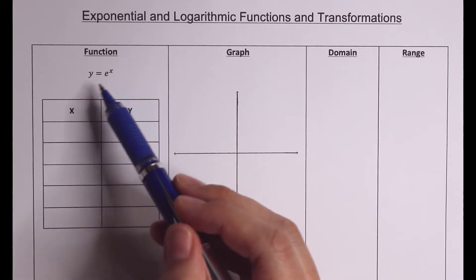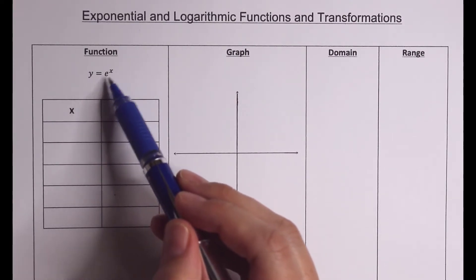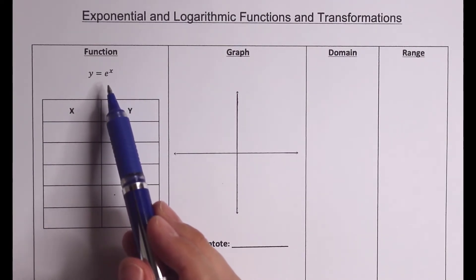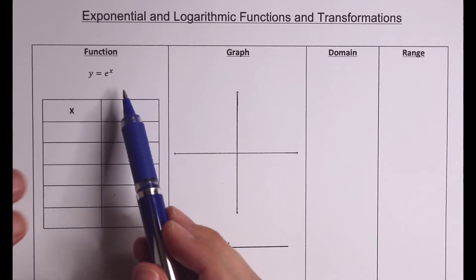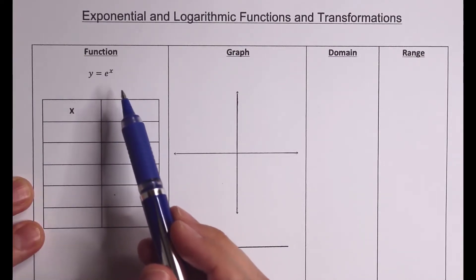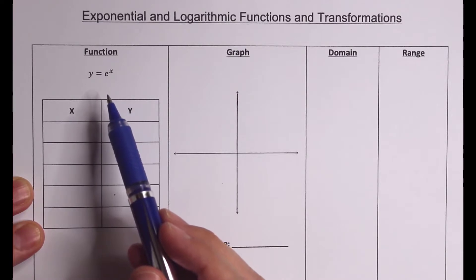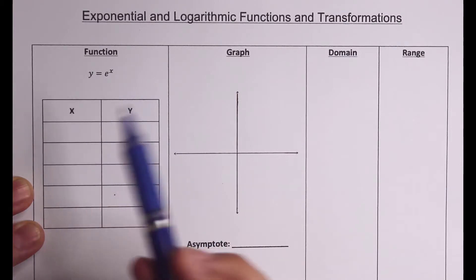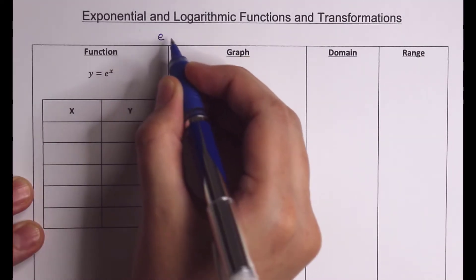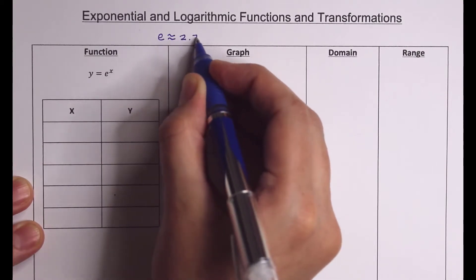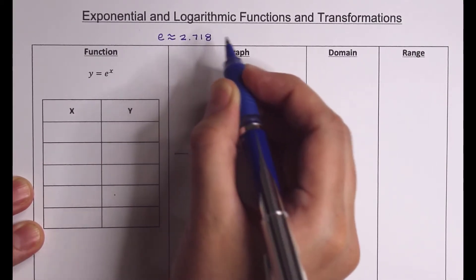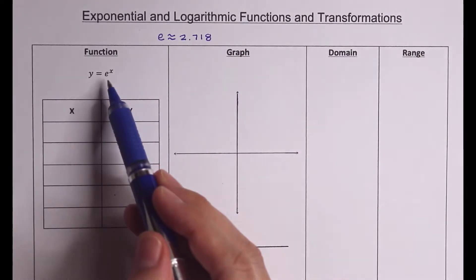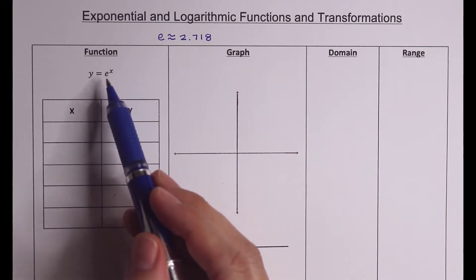The first function we're going to graph is y equals e to the x. Now if you've never seen e before, e is just a number. You know the number pi? When you hear pi, most people know it's about 3.14. So when you hear e from now on, just think it's a number. E is about 2.718. It is the natural number — a very important number that comes up often.